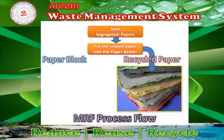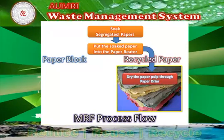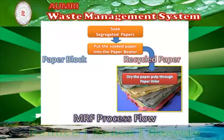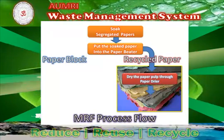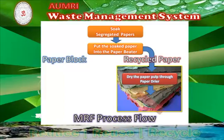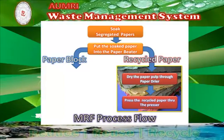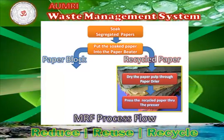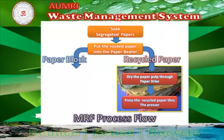Place the pulp in the strainer, and put the collected pulp in the dryer. You can get a recycled paper once it dries up. Or, if you are going to make the pulp into a paper block, you need to do the following.